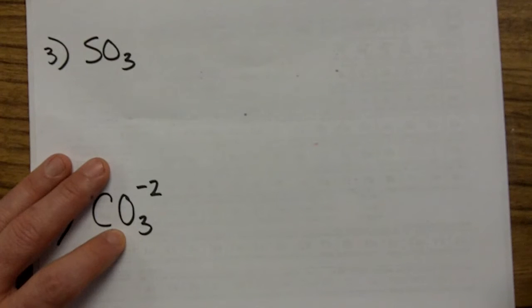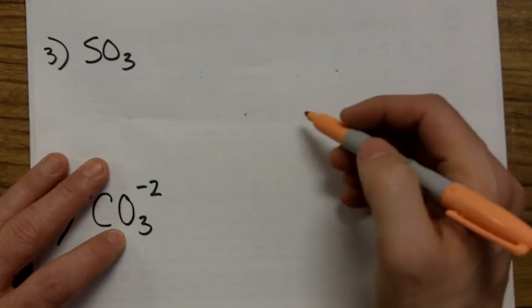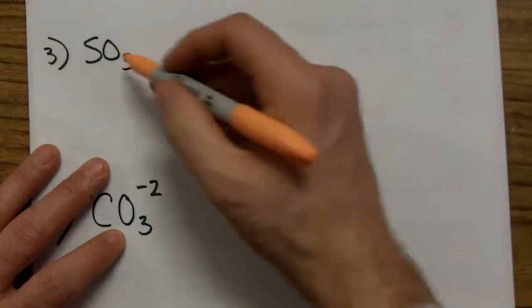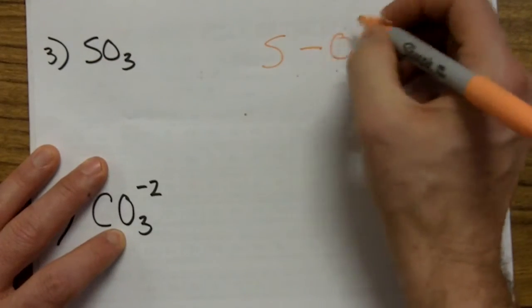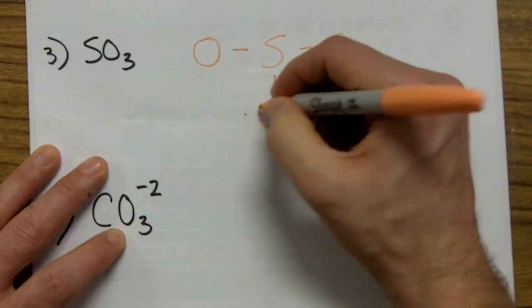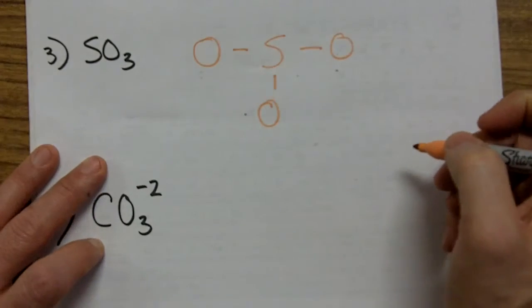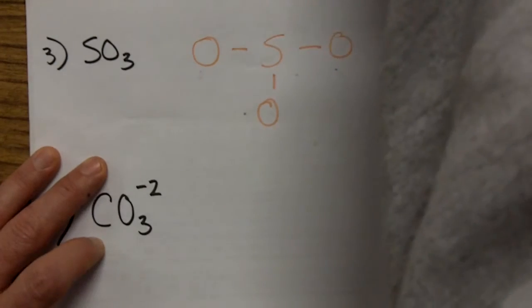The next example is SO₃. We look for the atom that only has one, which is obviously S. We put the S in the center with a bond to one O, another bond to an O, and another bond to an O. Then we go through and make them all happy.